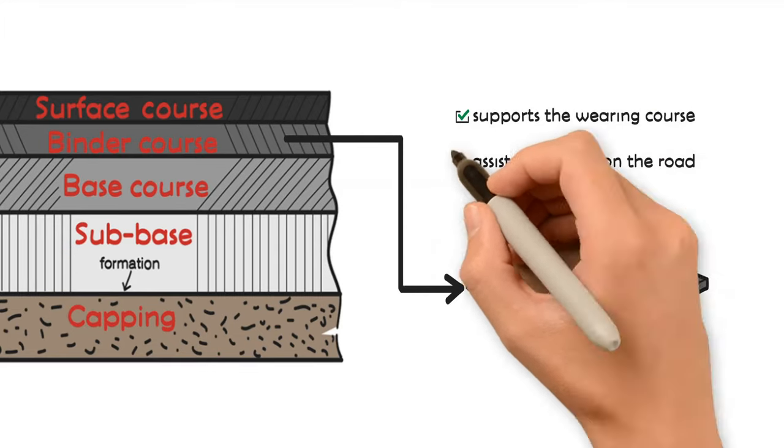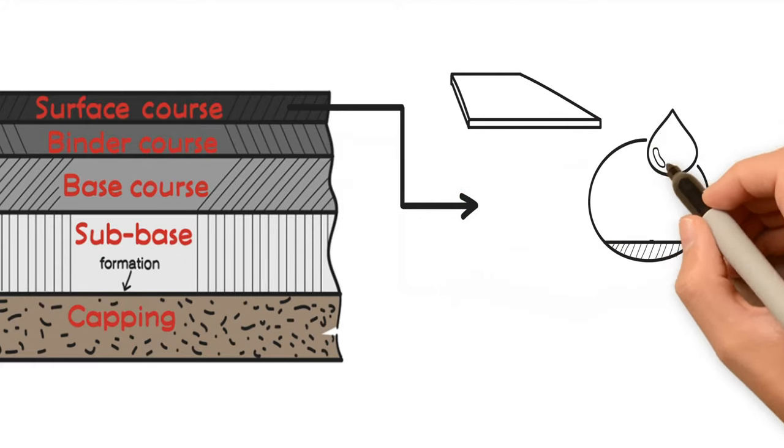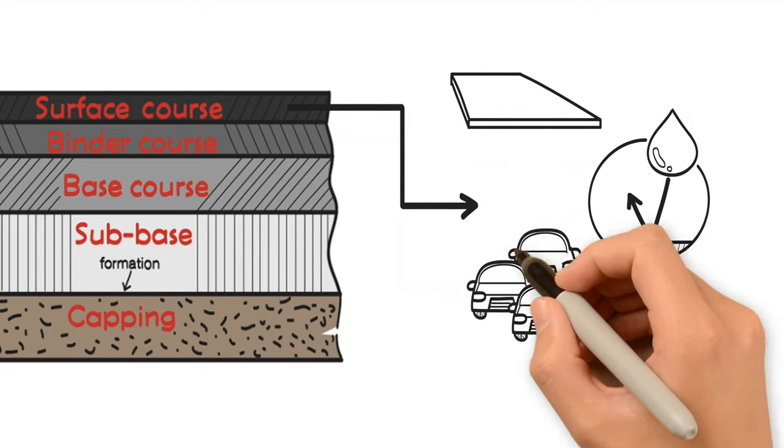The surface course provides a skid-resistant surface, waterproofs the pavement, and withstands the direct loading of traffic.